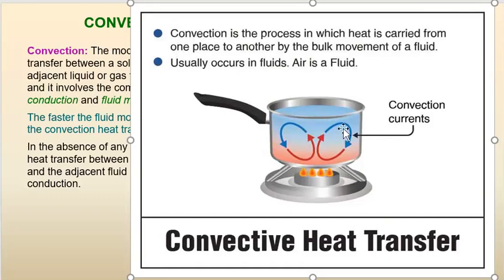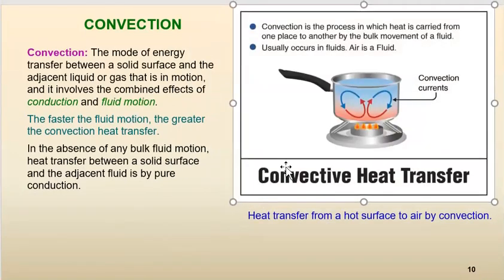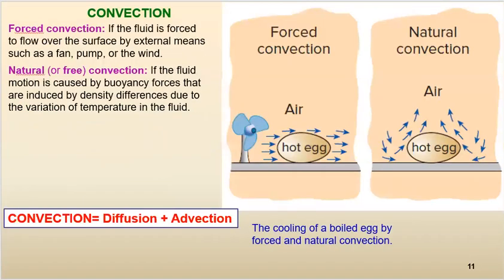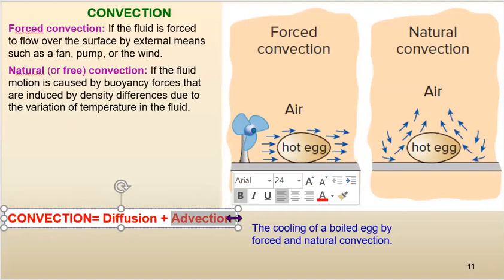The direct interaction between the surface and the fluid is called conduction or diffusion. That's why we say whenever you want to have convection, the very first mechanism is conduction — the basic mechanism in convection is conduction. So convection is the result of diffusion (another name for conduction) plus advection, which is also called bulk motion.